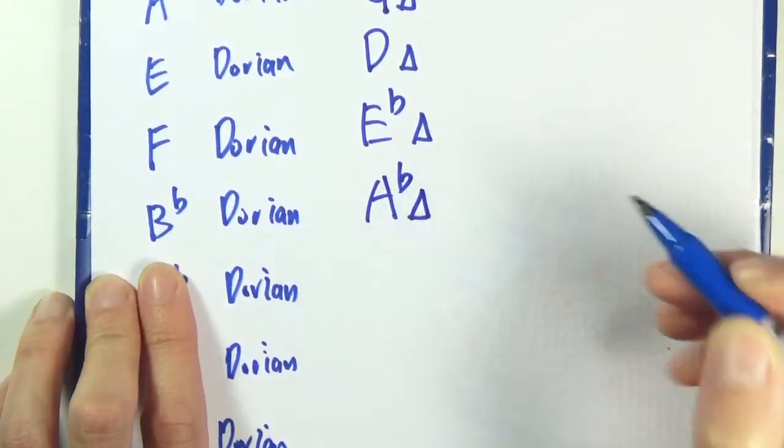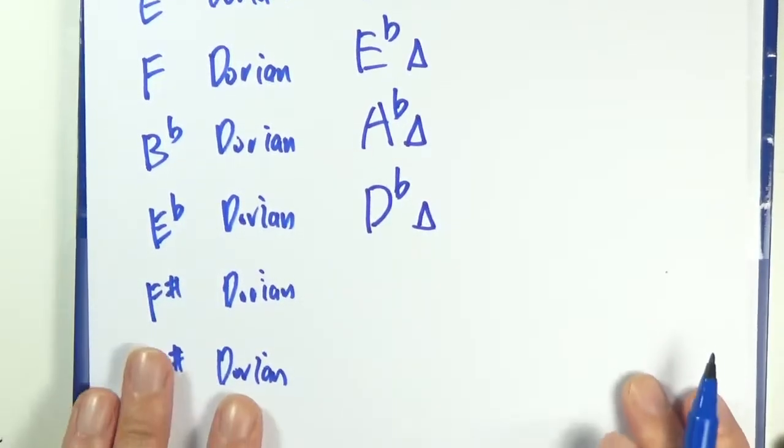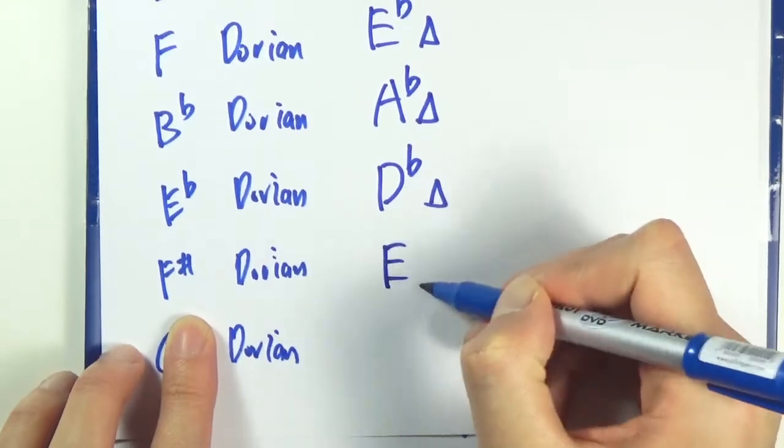A flat major. E flat - go down a whole step, D flat major. F sharp - go down a whole step, E, so E major.